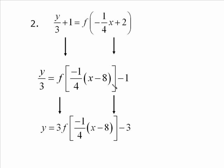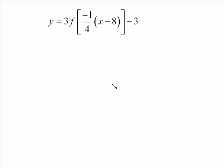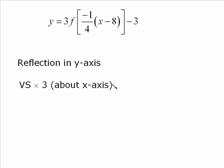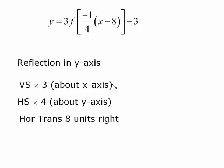This is what we get in its simplest form. And now that we have that, we have to identify the transformations and walk our way through them in that alphabetic way. We have a reflection in the y-axis, a vertical stretch by a factor of 3 about the x-axis, a horizontal stretch by a factor of 4 about the y-axis, a horizontal translation of 8 units to the right, and finally a vertical translation of 3 units down. So 5 transformations.